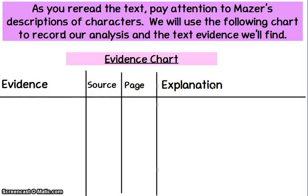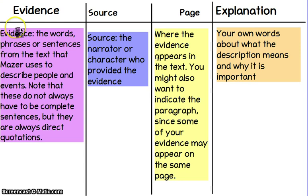As we reread the text, we're going to pay close attention to Maser's descriptions of characters, and we're going to use an evidence chart like the one on the screen to record our analysis and the text evidence we find. In the first column, we're going to place our evidence — words, phrases, or sentences from the text that Maser uses to describe the characters. Just make sure your text evidence doesn't always have to be complete sentences, but they are always direct quotations. So we're not paraphrasing; we're directly copying lines and putting quotation marks around them.